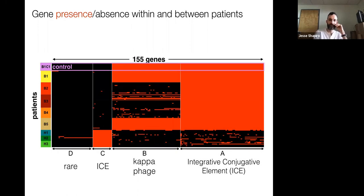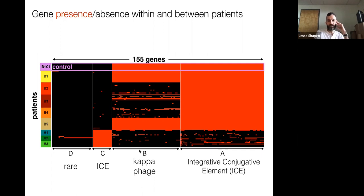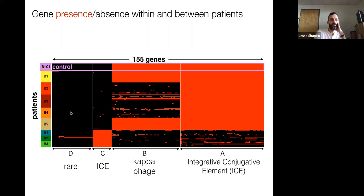Cluster A is an integrative element — basically a plasmid that can integrate into the genome. You can see it's part of the core for Bangladesh — all these patients have all of these genes — but in Haiti it can be variable, even within a patient. This is a kappa phage, a virus integrated into the bacterial genome. Again, it's present in all members of patient B1 and B5, but more variable within the other patients. Then there are these rare genes, which are of particular interest because they don't really follow the same pattern.